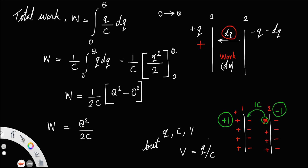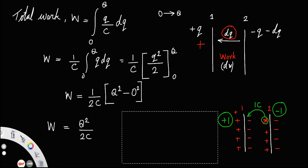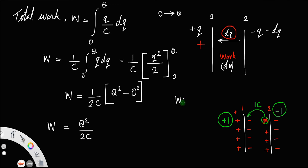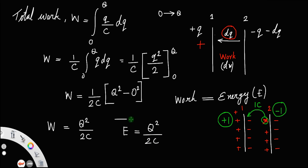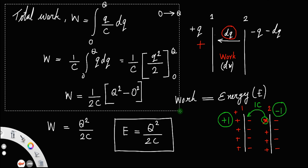By the law of conservation of energy, the work done is always stored as energy. So the work done to charge the capacitor is stored as electrical energy. Therefore, the energy stored in a capacitor is E = Q²/(2C). This is the expression for energy stored in a capacitor.